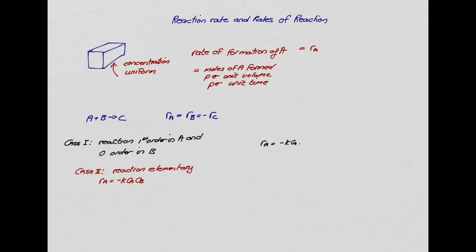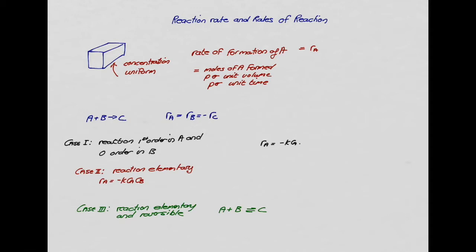Perhaps the reaction is elementary and reversible. For reversible reactions we write them with a double-headed arrow, meaning the reaction proceeds in both directions. In this case the rate of formation of A is minus K_F C_A C_B plus K_R C_C, where K_F is the forward rate constant and K_R is the reverse rate constant.